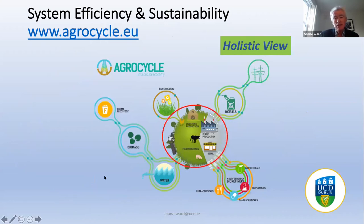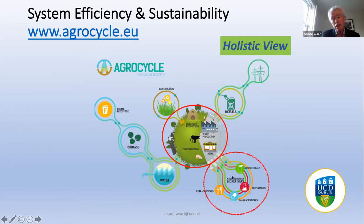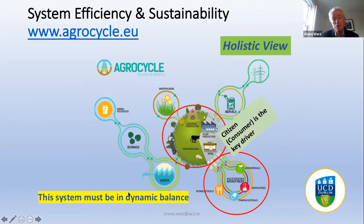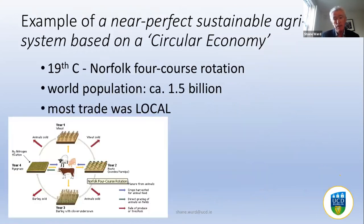You have to look at food in the concept of a full chain from farm to fork — from production on the farm right through to the consumer and beyond. You have the farm, processing plants, retail, and then there's a move in recent years to build a bioeconomy on top of this agri-food sector. But the key driver of this system is the citizen, the consumer. And this system must be in dynamic balance.